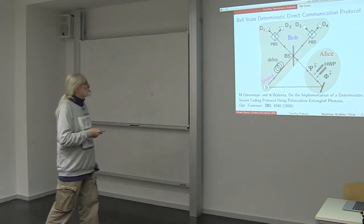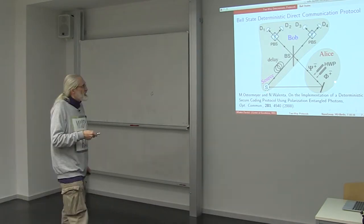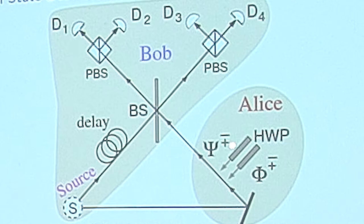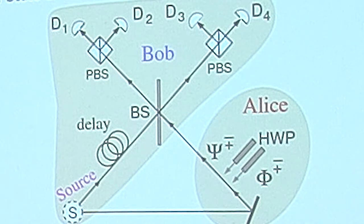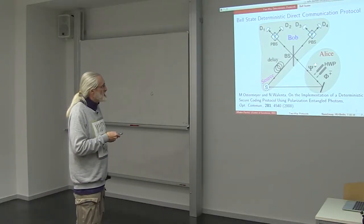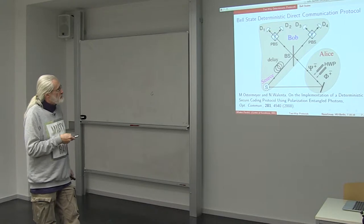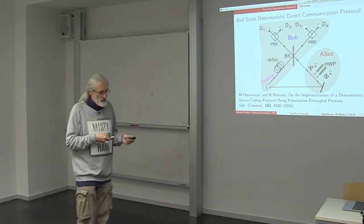By introducing a half-wave plate, Alice can change psi-minus which Bob is repeatedly sending, and by changing psi-minus to psi-plus or to phi-plus and phi-minus, she can send messages - four different messages in this case or two in ping-pong protocol.